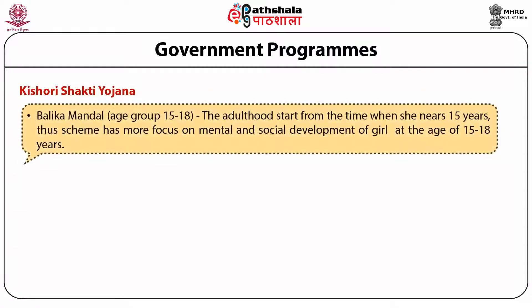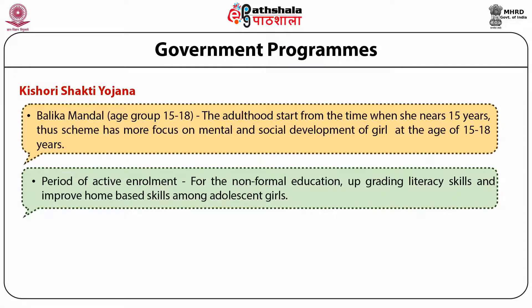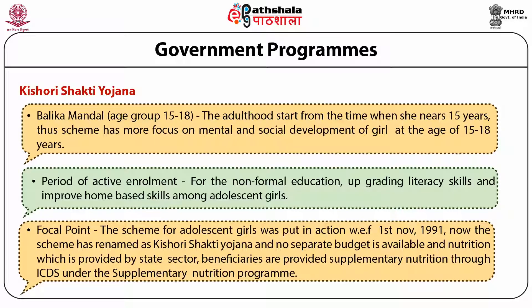In the Balika Mandal program, for the age group 15 to 18 — a continuation of this scheme — adulthood begins when she nears 15 years. The scheme focuses on mental and social development of girls aged 15 to 18, with the goal of improving home-based skills. The scheme for adolescent girls was put into action from 1st November 1991, and later renamed as Kishori Shakti Yojana. No separate budget was allocated; nutrition is provided by the state sector through the supplementary nutrition program under ICDS.